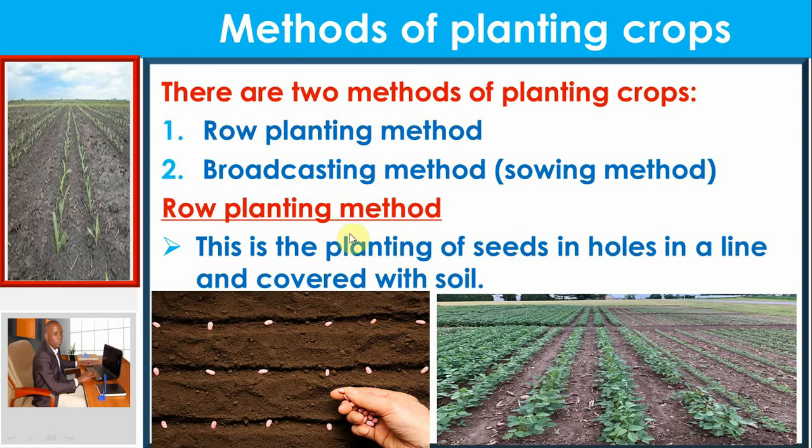Unlike broadcasting, which is the scattering or throwing of seeds in the garden using hands — just scattering them on the surface of the soil — row planting means we plant our seeds in holes in a line, and then cover them after.